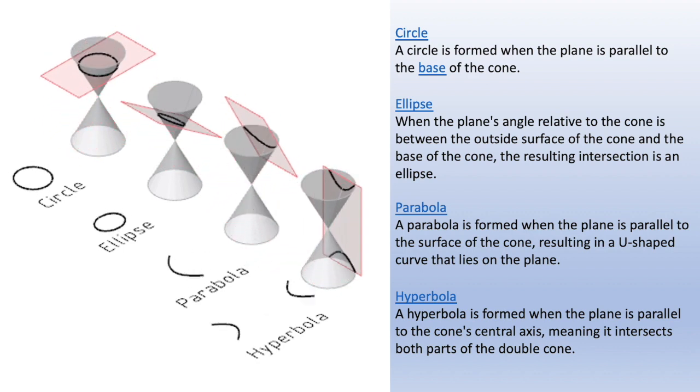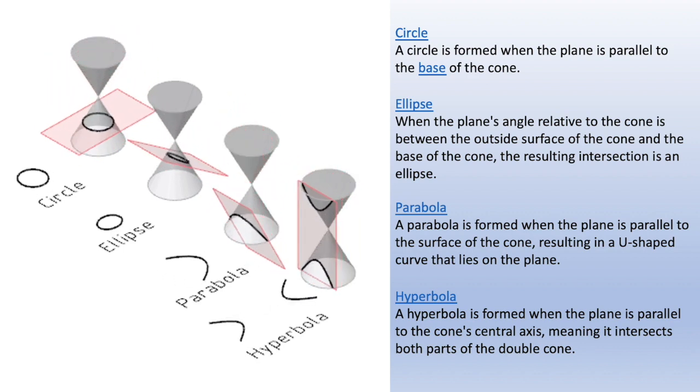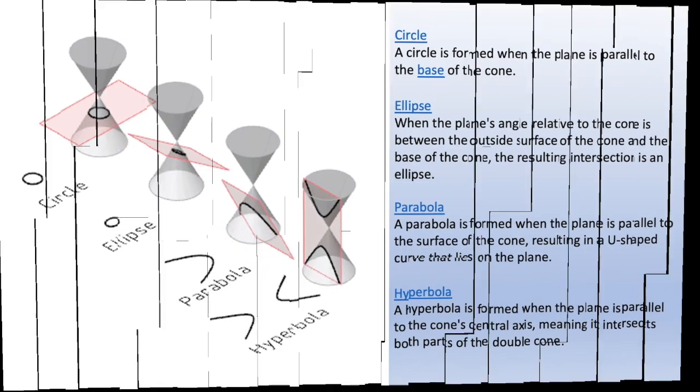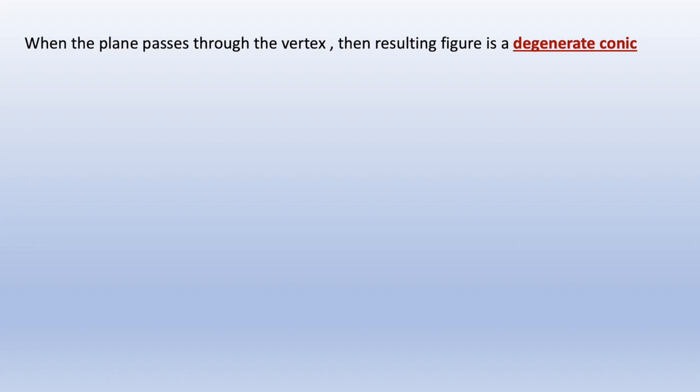We also have degenerate cases. What are the degenerate cases? When the plane passes through the vertex, then the resulting figure is a degenerate conic.